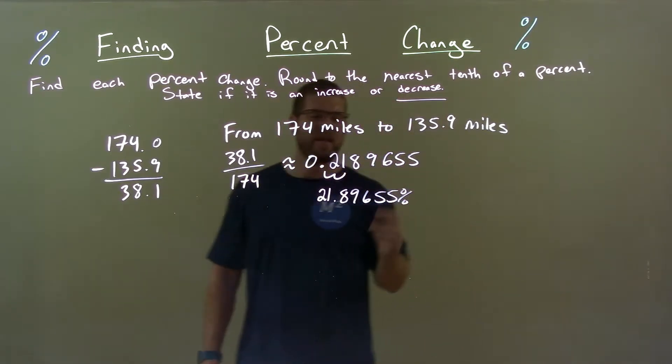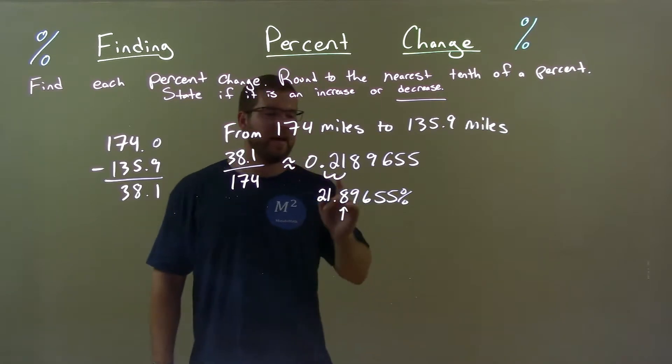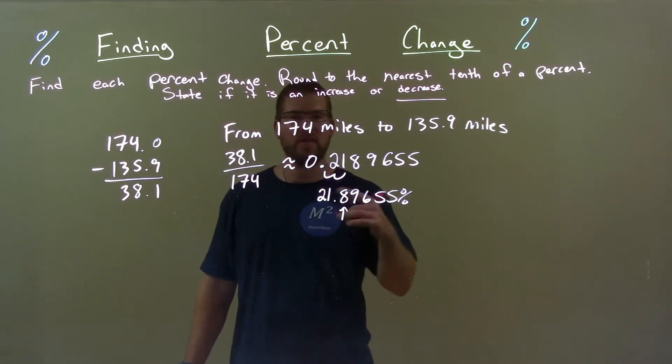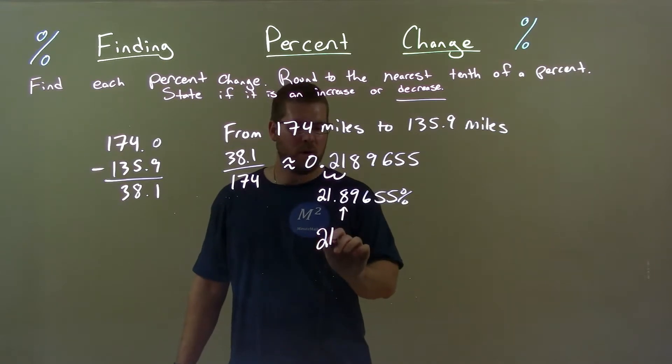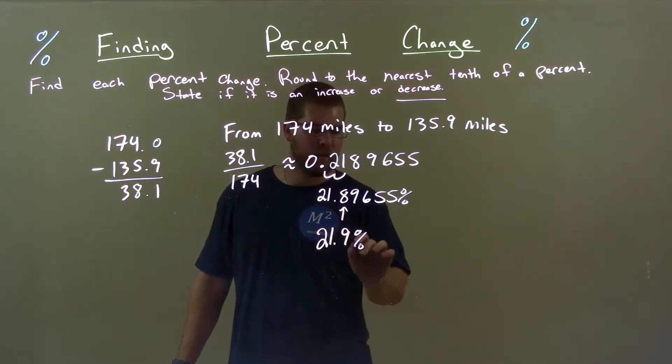Round to the nearest tenth of a percent. Look at the 8, and then we got a 9 to the right. The 9 causes the 8 to go up one. 21.9% now we have right there.